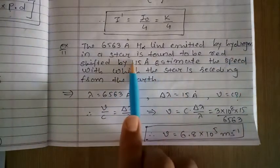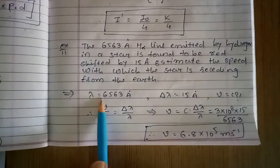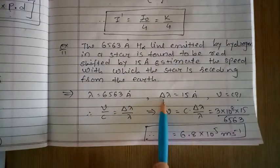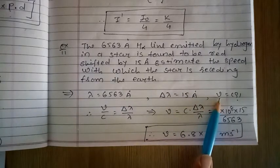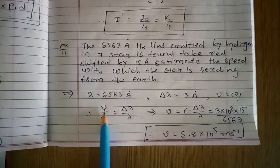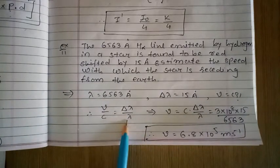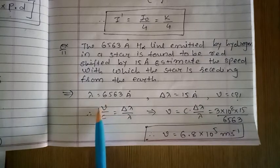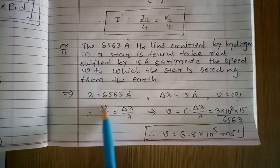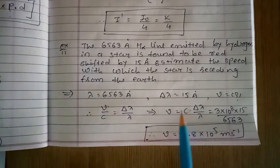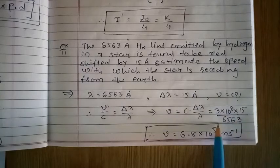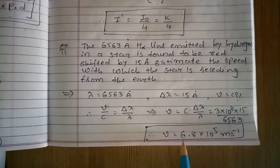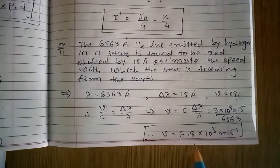We know the wavelength lambda is 6563 Angstrom, redshifted by 15 Angstrom, so delta lambda is 15 Angstrom. We have to find speed V. Using V equals C into delta lambda by lambda, with C equals 3 into 10 raise to 8, delta lambda 15, and lambda 6563, we get V is equal to 6.8 into 10 raise to 5 meter per second.